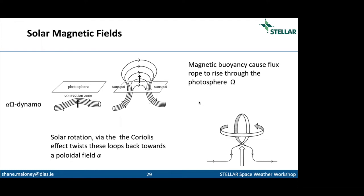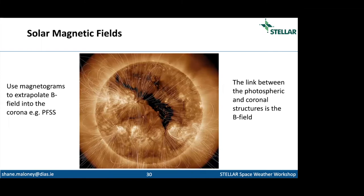This is a very simplified model and we don't fully understand how it works in terms of numerical modeling — it's very hard to get stable dynamos. Using these magnetograms and our knowledge of MHD, we can make extrapolations of what the magnetic field should look like in the corona. We see a really good correspondence — the coronal structures look like they do because they follow the magnetic field lines. This is a potential field source surface model, which assumes a potential field with no currents and no free energy to drive magnetic reconnection.